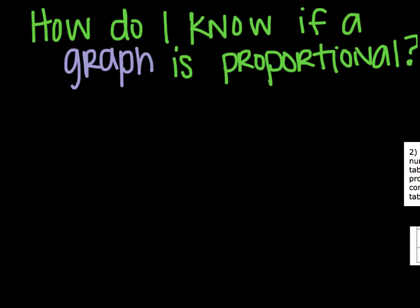How do I know if a graph is proportional? Well, if you remember what I said about proportional, it means that it must be a straight line that goes through the origin. It has to meet all of that criteria. So, for example, if you saw a graph that looks like this, it would not be proportional, because it's not going through the origin, nor is it a straight line.